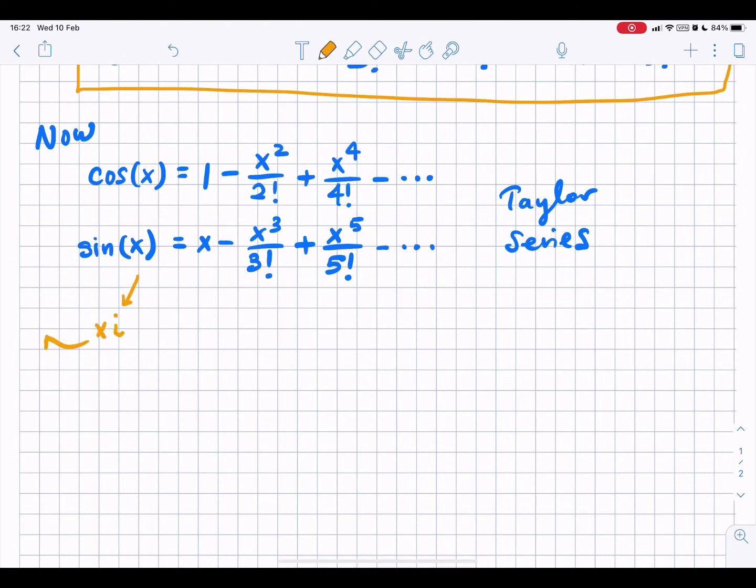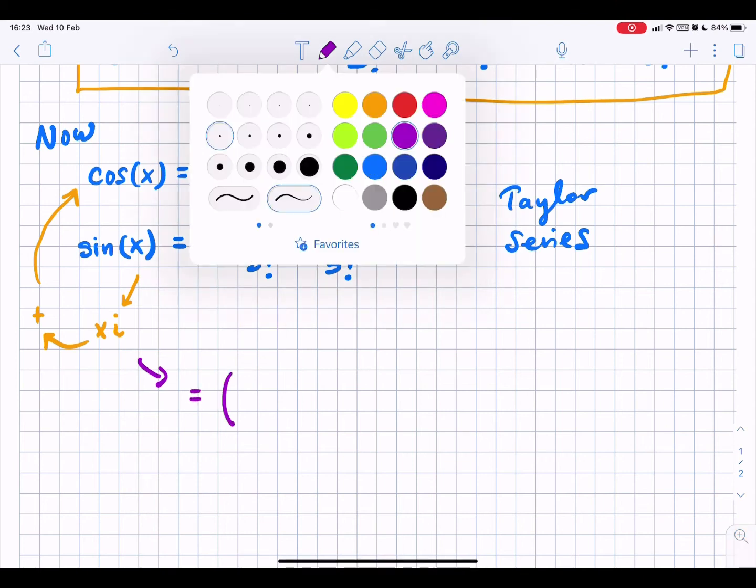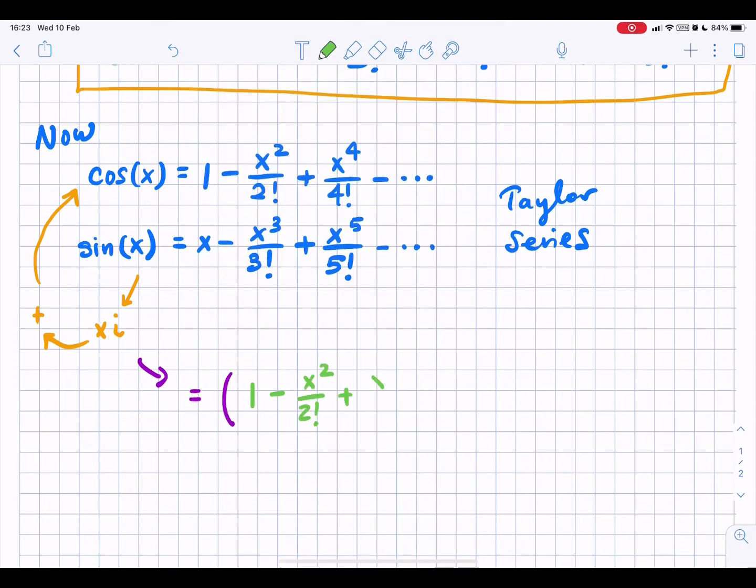Then, multiply this expansion, the sine expansion, by i and add it to the cosine series expansion. We will obtain this messy looking expansion.